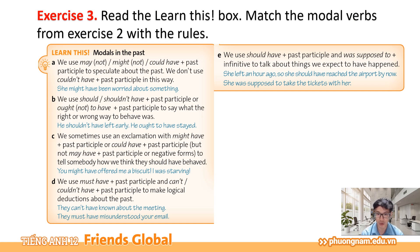Rule C: We sometimes use an exclamation with might have plus past participle or could have plus past participle — but not may have plus past participle or negative forms — to tell somebody how we think they should have behaved. Chúng ta thường dùng câu biểu cảm với might have và quá khứ phân từ hoặc là could have và quá khứ phân từ, nhưng không dùng may have hay dạng phủ định. Ví dụ: You might have offered me a biscuit. I was starving — Bạn đã có thể mời tôi một cái bánh quy. Tôi đã rất là đói. Đây là cách thể hiện ý kiến của mình về hành vi của một người đáng lẽ ra nên như thế nào.